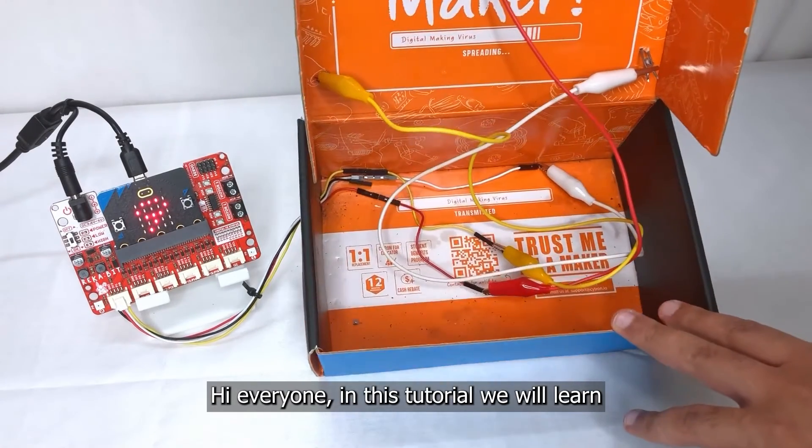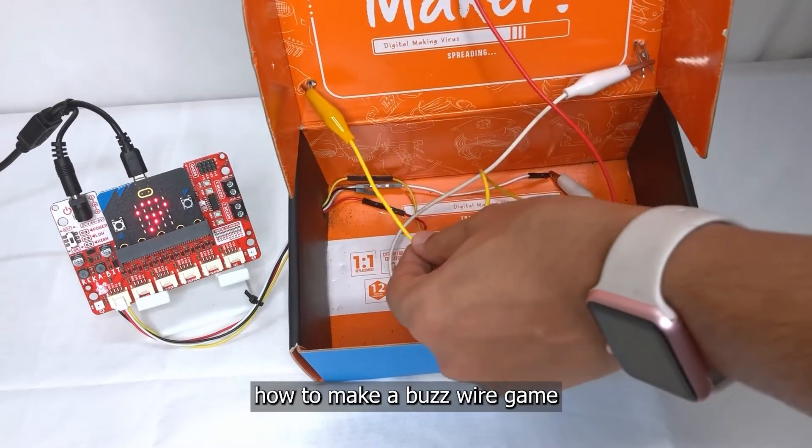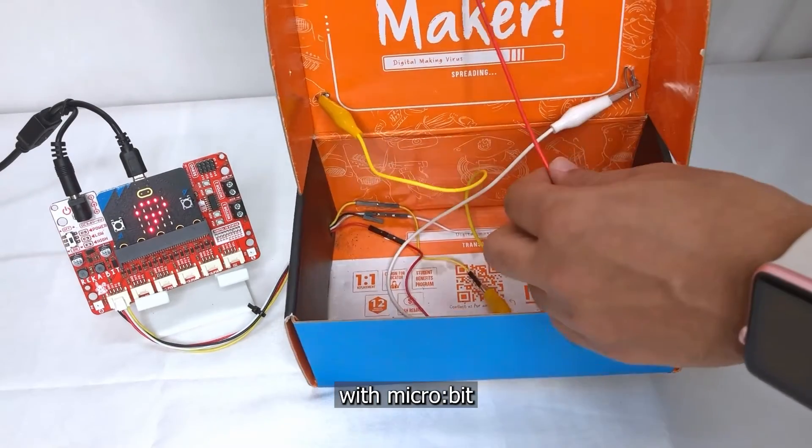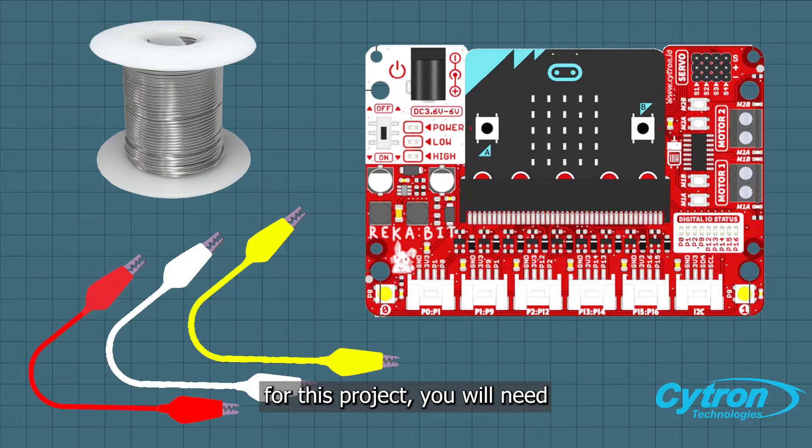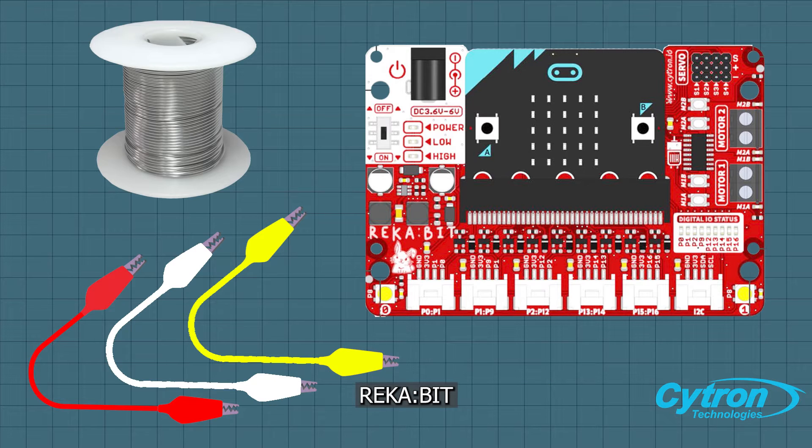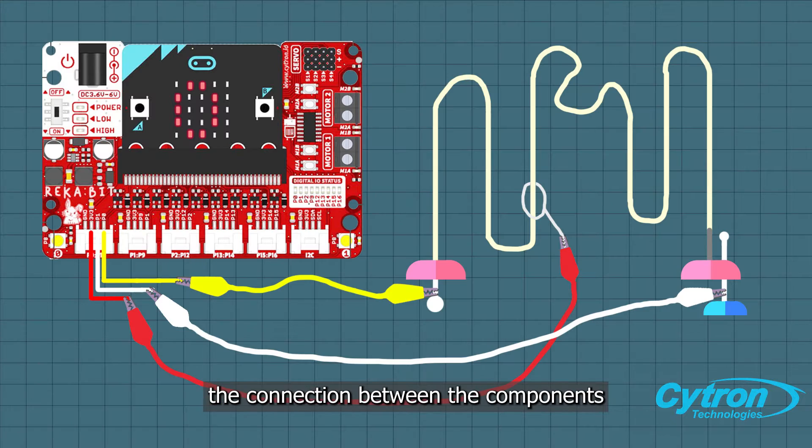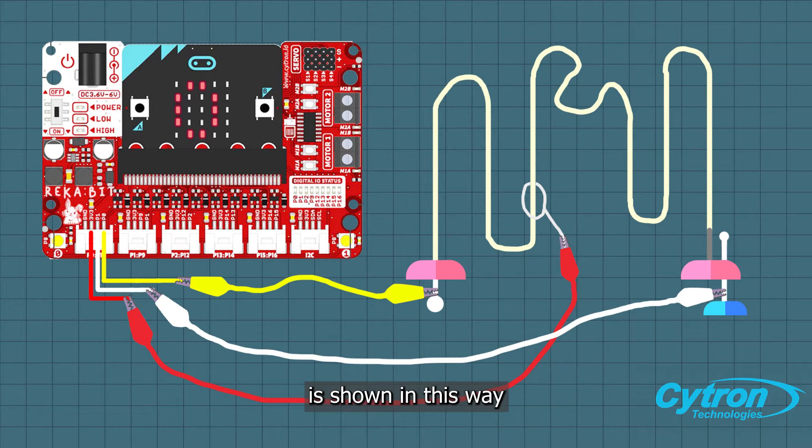Hi everyone, in this tutorial we will learn how to make a buzzwire game with micro:bit. For this project, you will need a micro:bit, steel wire, and crocodile clips. The connection between the components is shown in this way.